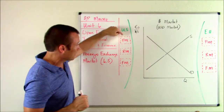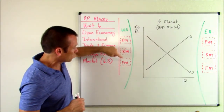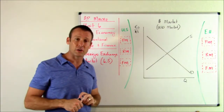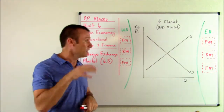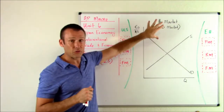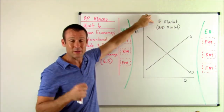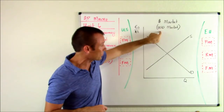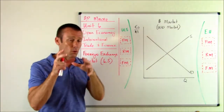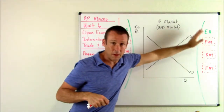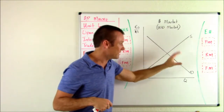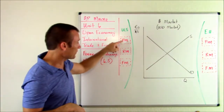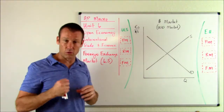If you want to interact in the U.S. product market, resource market, or financial market, what type of currency are you going to need? You're going to need dollars. So when we talk about the U.S. dollar market — also called the USD market — we're thinking about people, maybe people in Europe, coming here demanding dollars so that they can go to one of those markets.